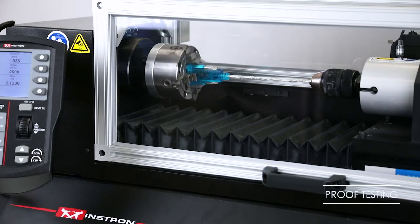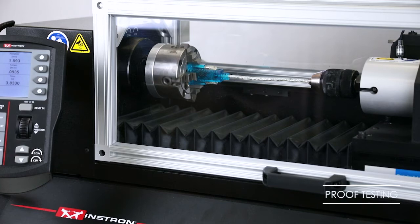Proof testing is when a torsional load is applied and held for a fixed amount of time. This proves that the product can withstand torsional forces for a set duration.